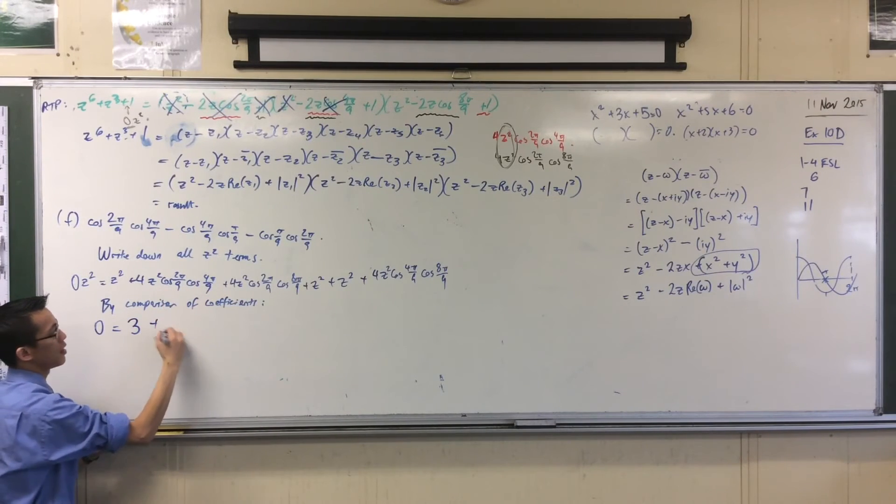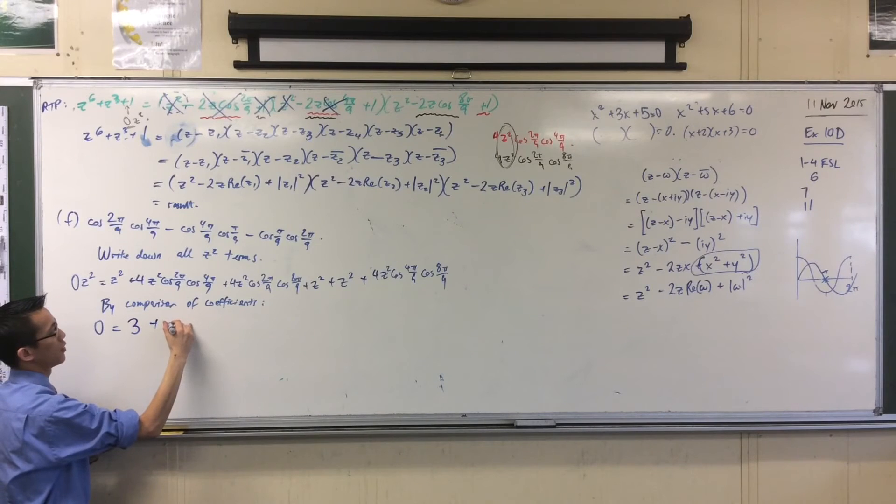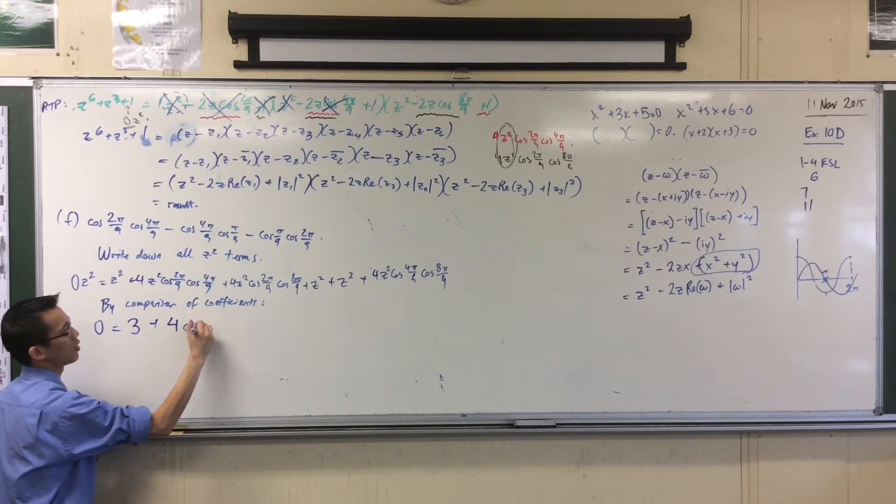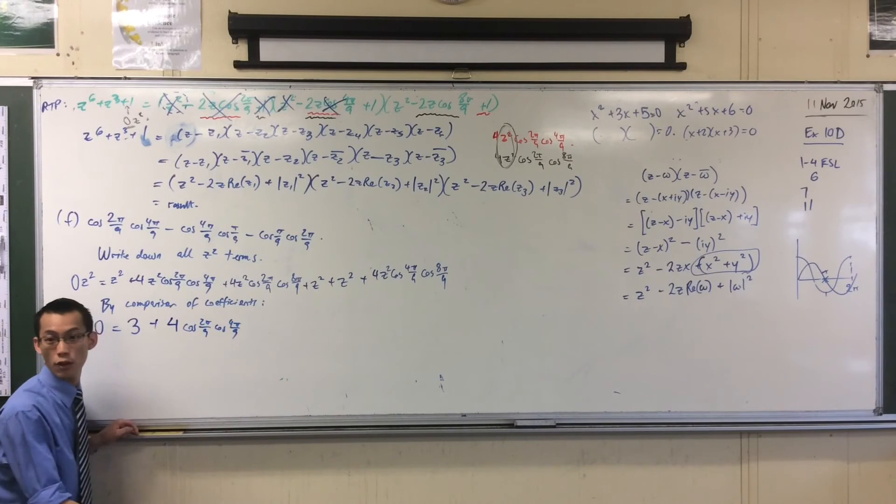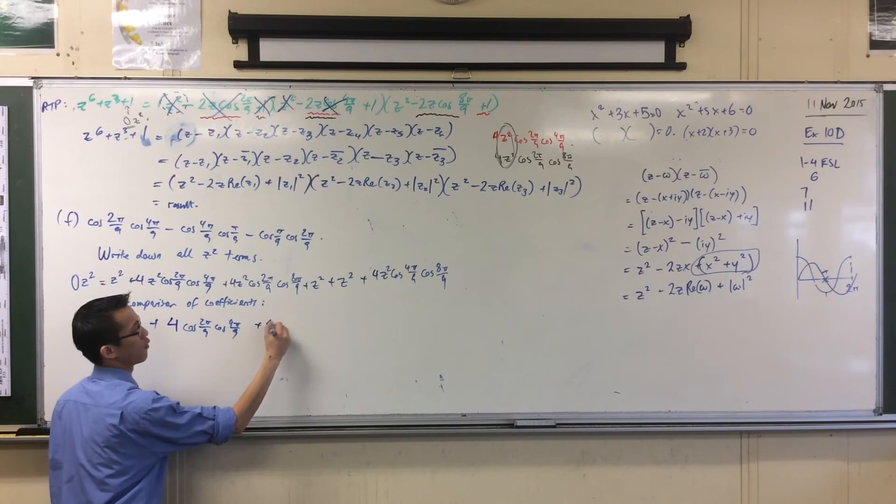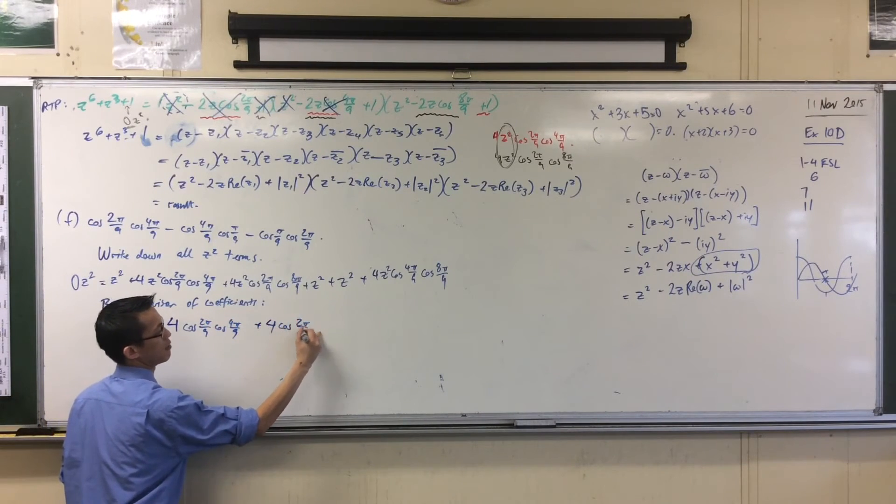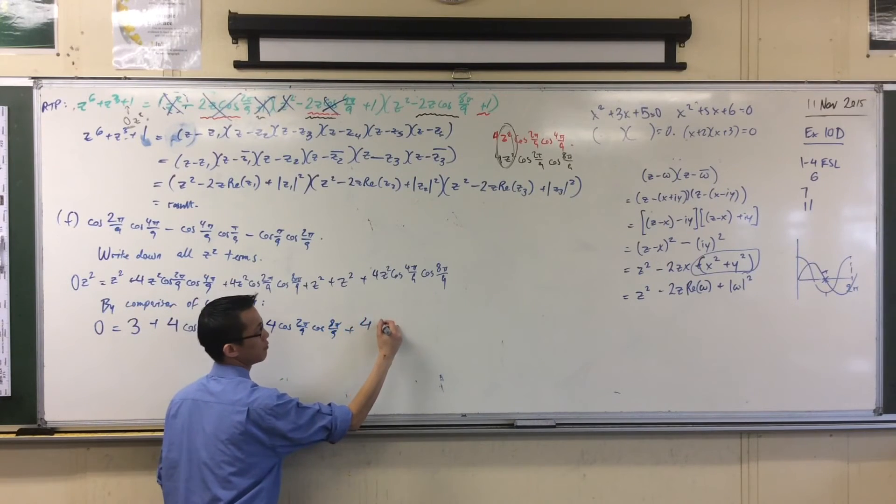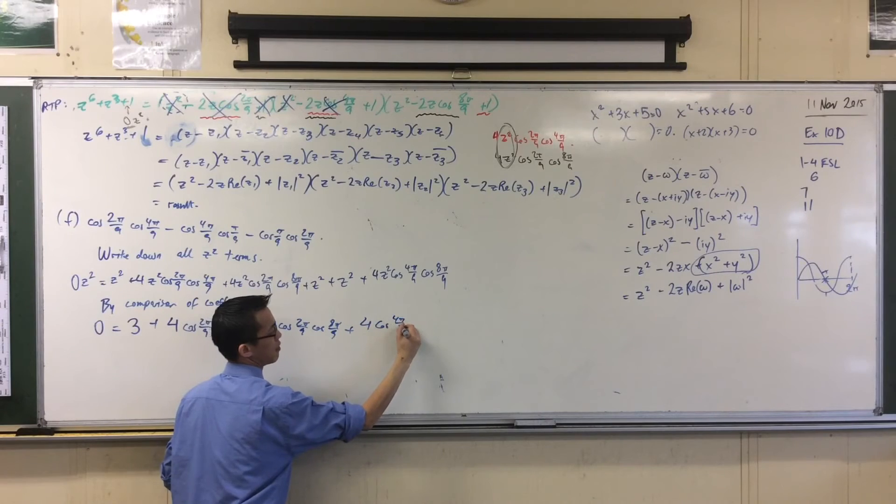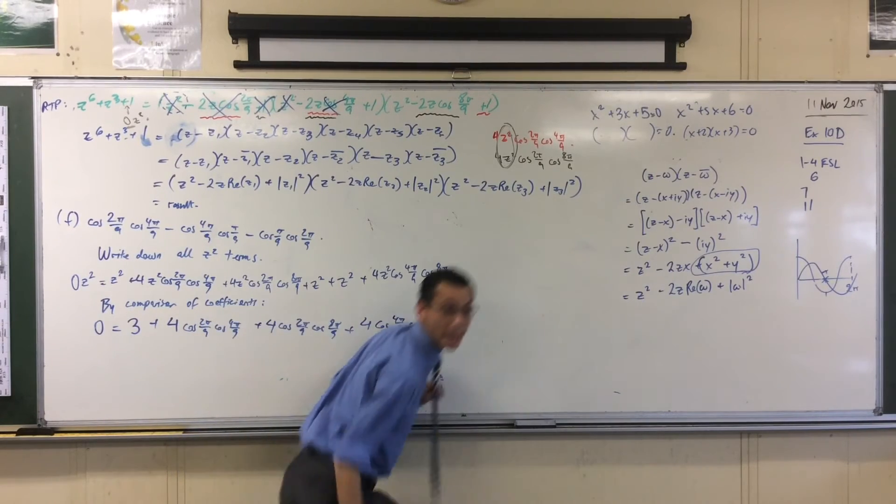And then I've got these other guys here. Let's see here. So I've got the four cos 2 pi on 9 cos 4 pi on 9. You see I've got four of them? I've also got four of this one. 8 pi on 9. And I've got four of this one. You okay with that?